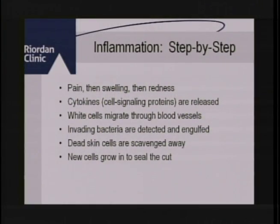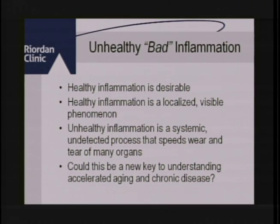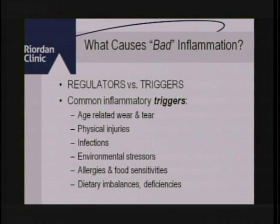We have a number of degenerative conditions. I challenge you to think of one medical condition that doesn't have some kind of 'itis' or inflammation in it. Inflammation is pain, swelling, and redness — there are little messengers released that tell the white blood cells where to go and where to start the healing process. There is a systemic type of bad inflammation that you can actually detect by getting a C-reactive protein blood test from your doctor.